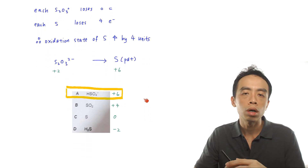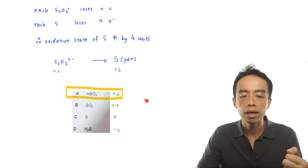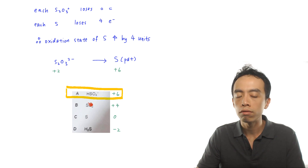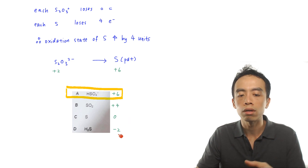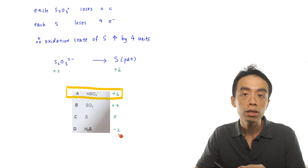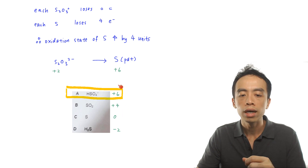Now we check the options for which has sulfur with an oxidation state of +6. Option A, HSO₄⁻: sulfur is +6. Option B, SO₂: sulfur is +4. Option C, sulfur element: oxidation state is 0. Option D, H₂S: sulfur is −2. Since the product must have sulfur at +6, the answer is option A, HSO₄⁻.